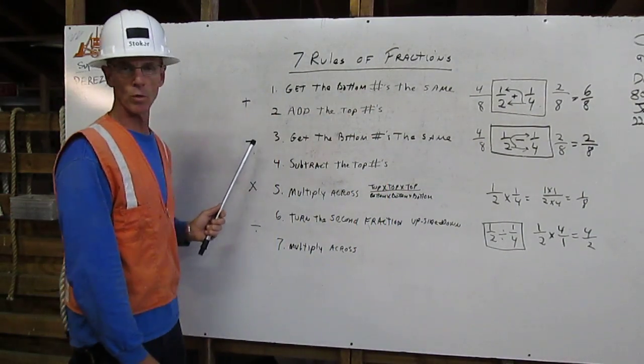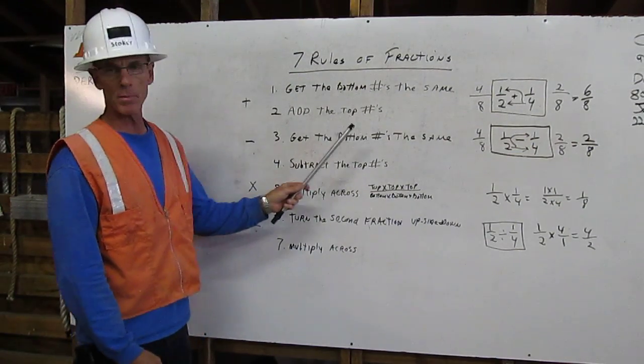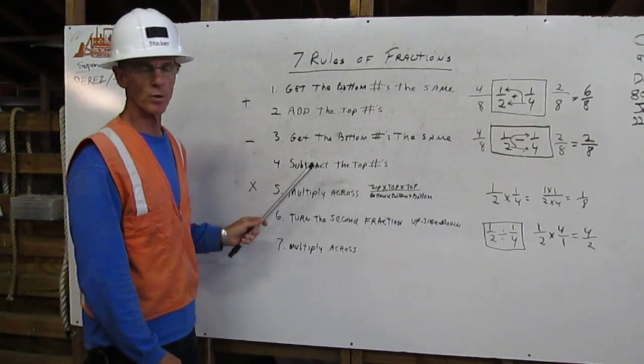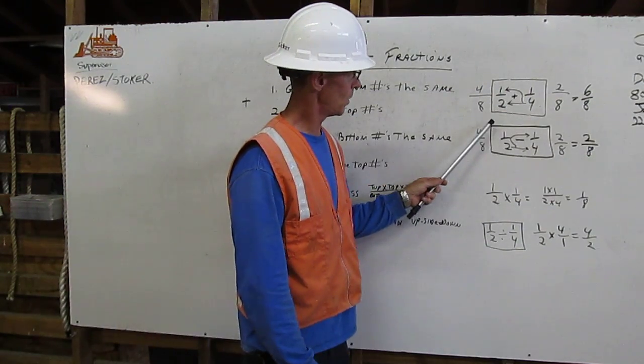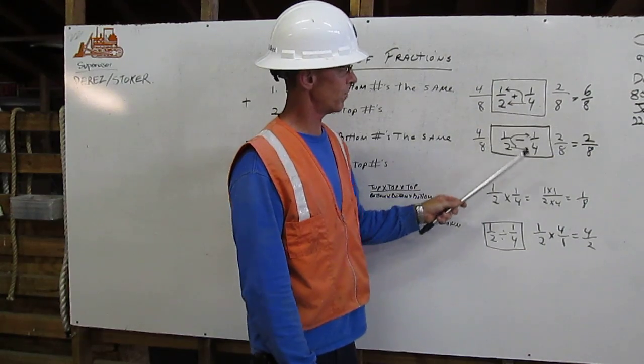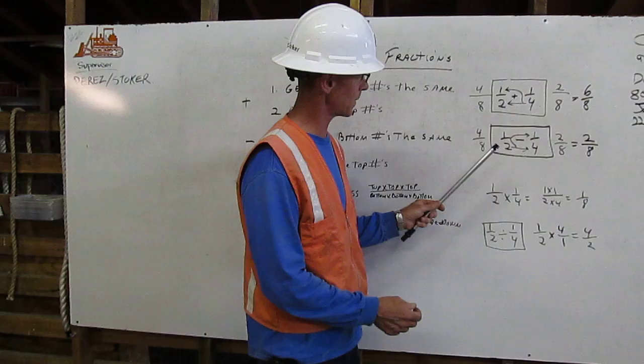Second, the two rules of subtraction. Get the bottom numbers the same, subtract the top numbers. Here's our example. One-half minus one-fourth. Once again, we can't subtract because they're two different types of fractions.